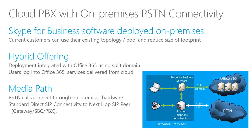One important concept is how signaling and media path work. Once a user is homed in Office 365 Skype for Business Online, all signaling for that user will always go to Skype for Business Online. However, as soon as this user wants to place a PSTN call, the media will go directly to your Skype for Business on-premises infrastructure. We will look into these scenarios in more detail in the following slides.